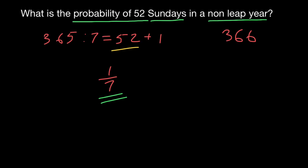So our answer has to be, take a look, one minus one seventh. So probability is going to be six over seven. And this is going to be the probability to have 52 Sundays in a year. And this is going to be the probability to have 53 Sundays in a year.